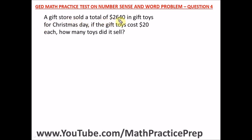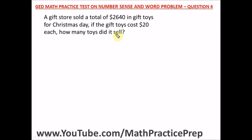Question four: A gift store sold a total of two thousand six hundred and forty dollars in gift toys for Christmas Day. If the gift toys cost twenty dollars each, how many toys did it sell? To find how many toys were sold, we divide the total sales by the cost per toy.